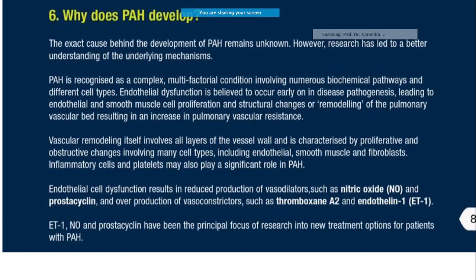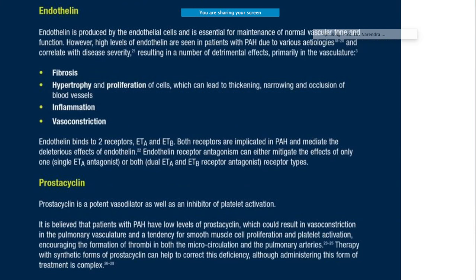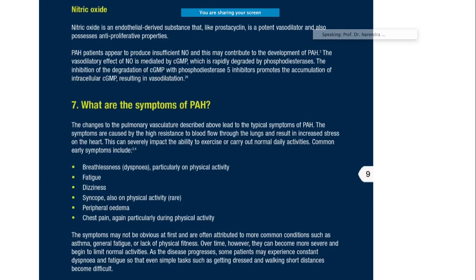Why does PAH develop? It involves multiple factors - it's a complex disease with involvement of biochemical pathways and many different cell types. The vasoconstrictors and vasodilators involved include nitric oxide, prostacyclin, thromboxane A2, and endothelin-1. Endothelin helps fight fibrosis, hypertrophy, inflammation, and vasoconstriction. Prostacyclin is a very important vasodilator, and nitric oxide is the EDRF - endothelial derived relaxing factor.